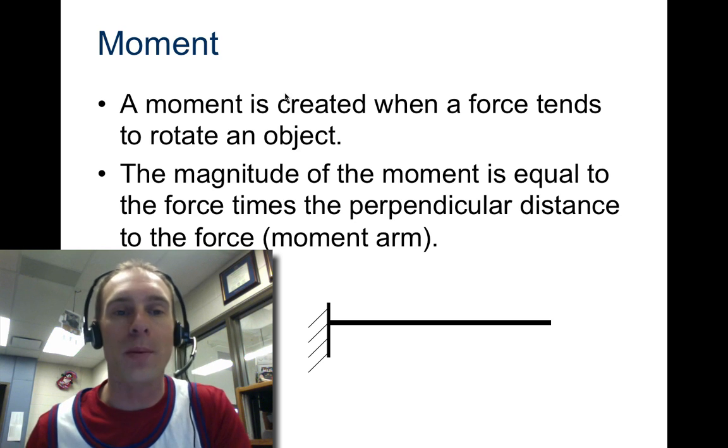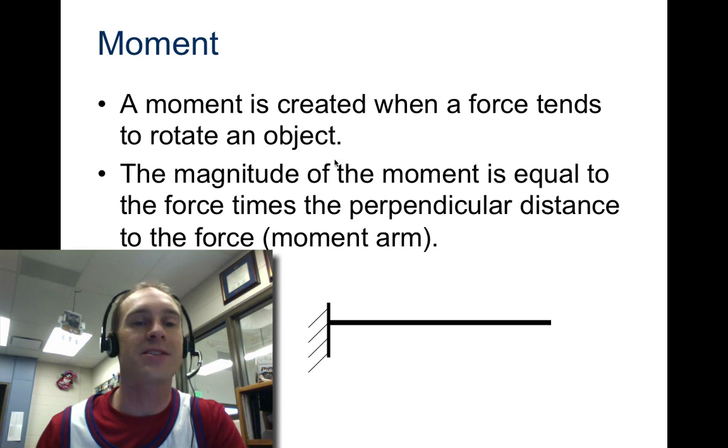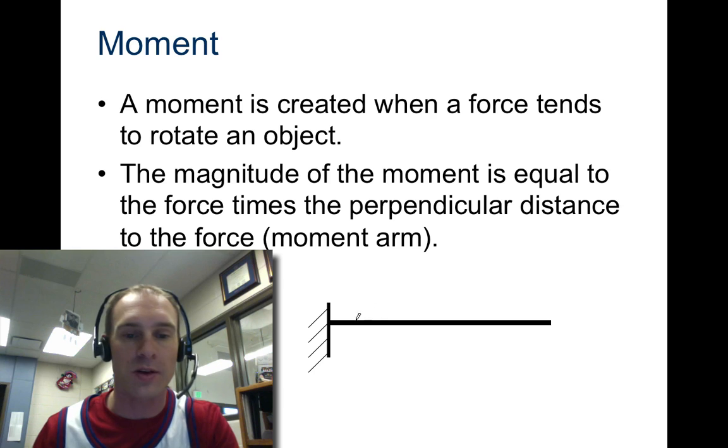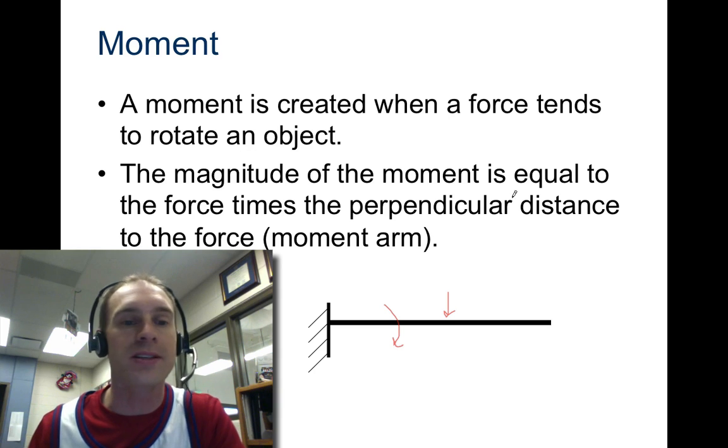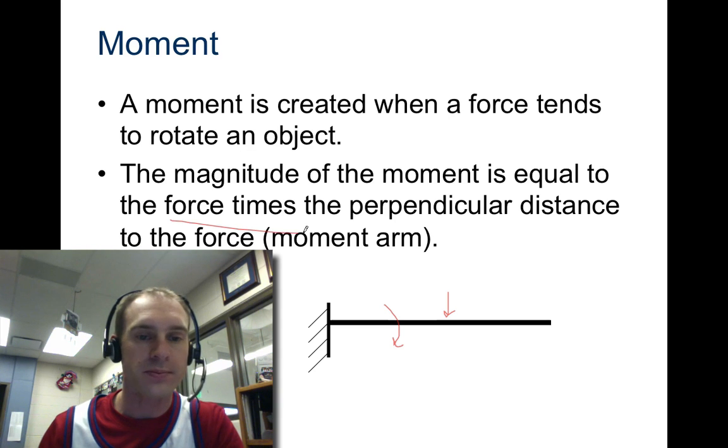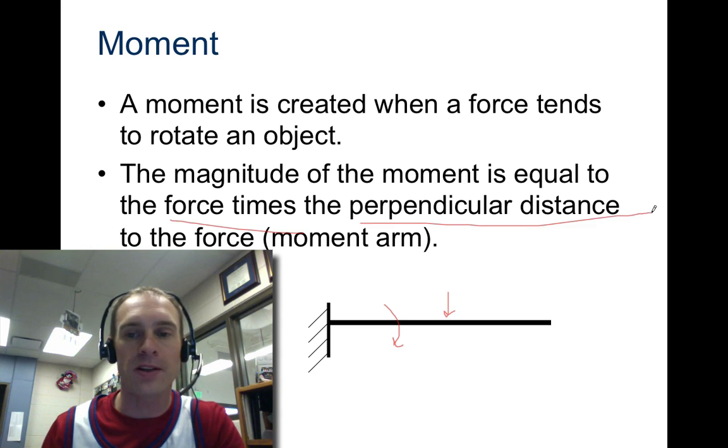Let's look a little bit more at a moment. A moment is created when force tends to rotate an object. If you have a force applying here, then that tries to rotate this object down in that way. The magnitude of the moment is equal to the force times the perpendicular distance.